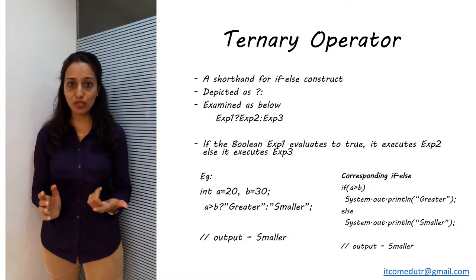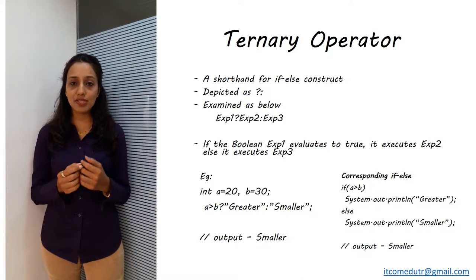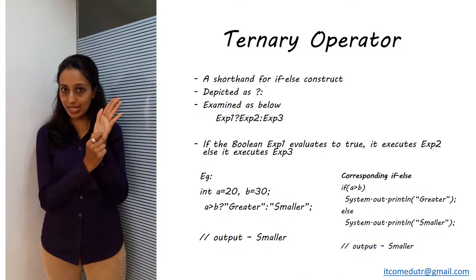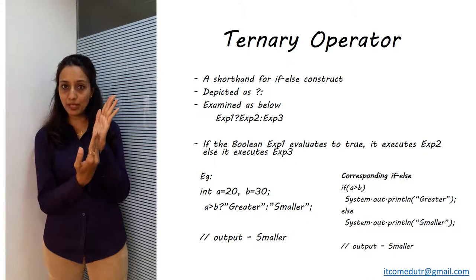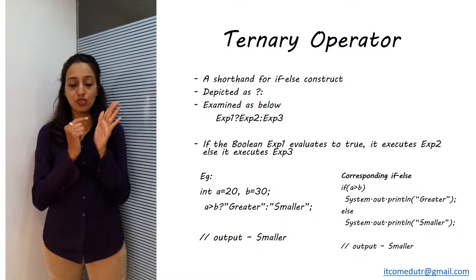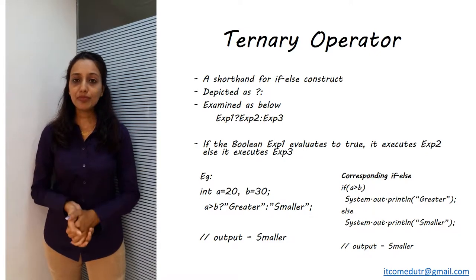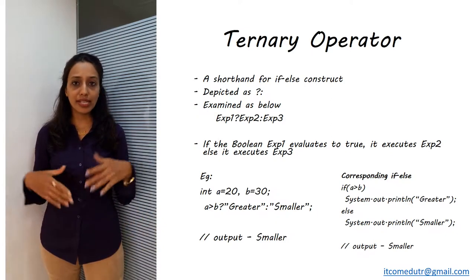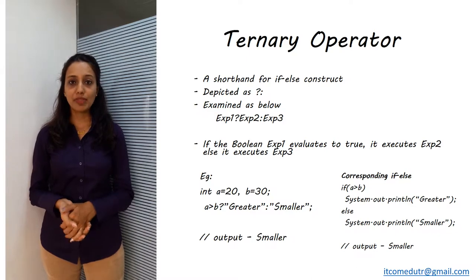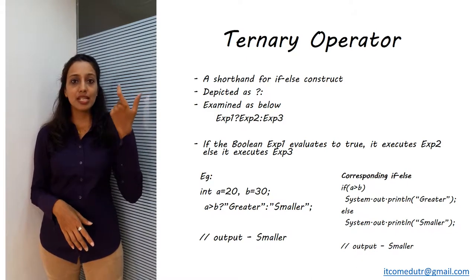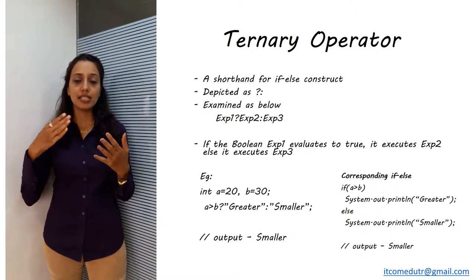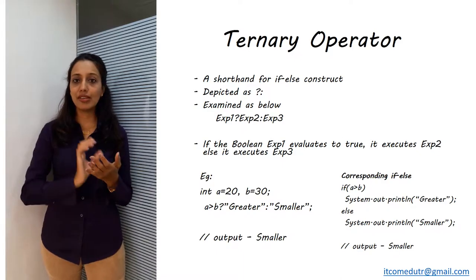To give you a better understanding, there is an example on screen. It checks whether A is greater than B. A is 20 and B is 30. If A greater than B is true, the question mark means: print 'greater'; otherwise after the colon: print 'smaller'. In our case A greater than B is false because 20 is not greater than 30, so it will jump to expression three and print 'smaller'. You can print whatever you like or do any other operation or calculation based on your requirement. The ternary operator is a one-line shorthand for the if-else construct — evaluate the first expression, if true execute the second, if false execute the third.